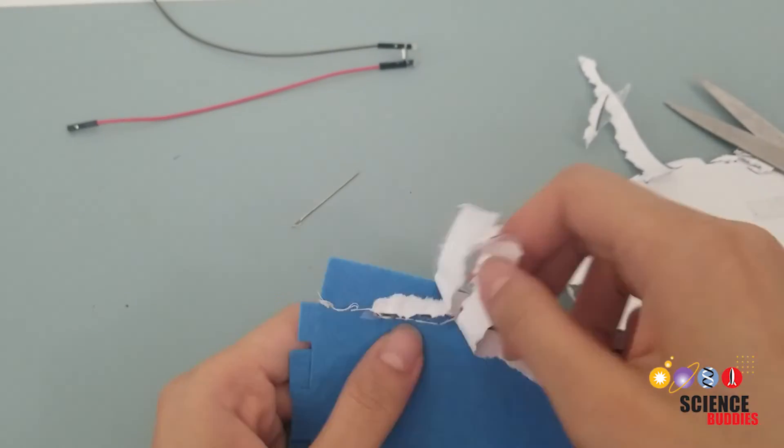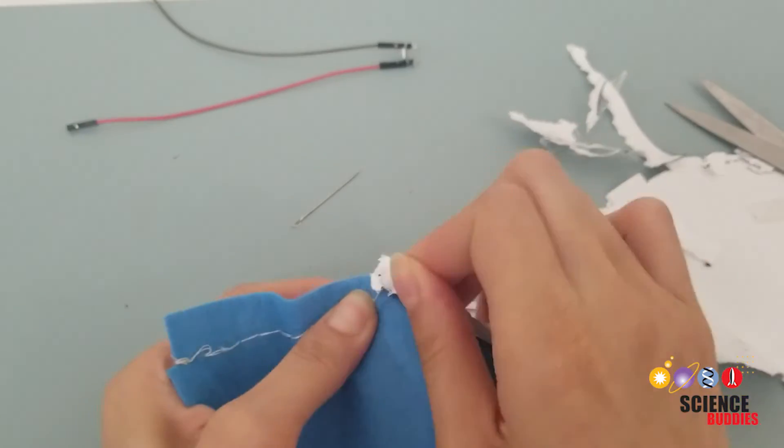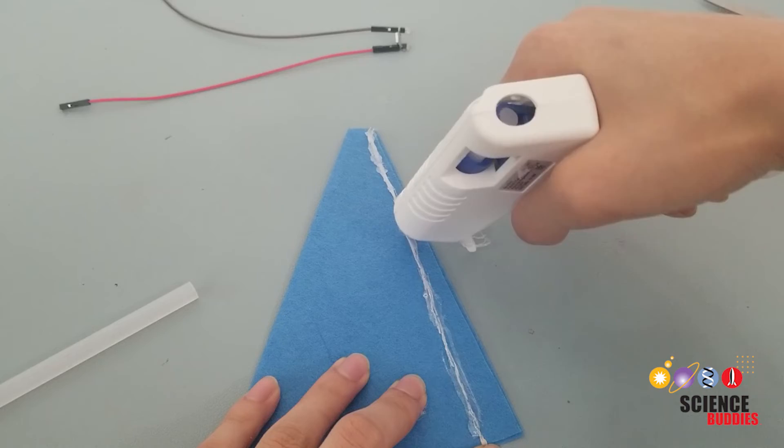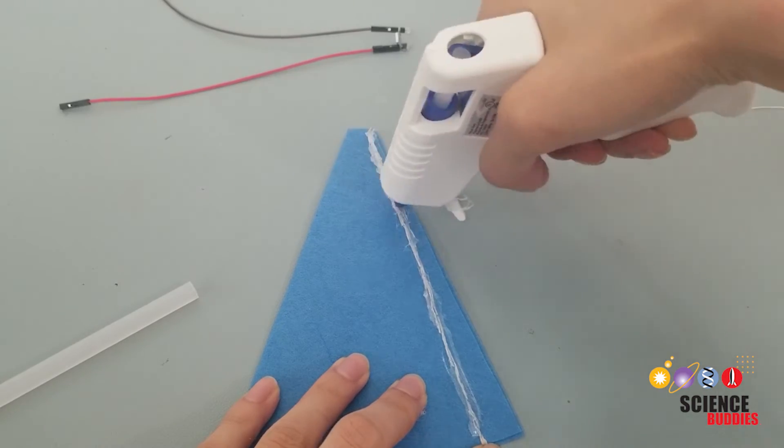If not, wet the paper around the stitches to make the paper easier to remove. Once the paper is removed, glue down your embroidery stitches with a little bit of hot glue on both sides. Wait for the glue to cool.